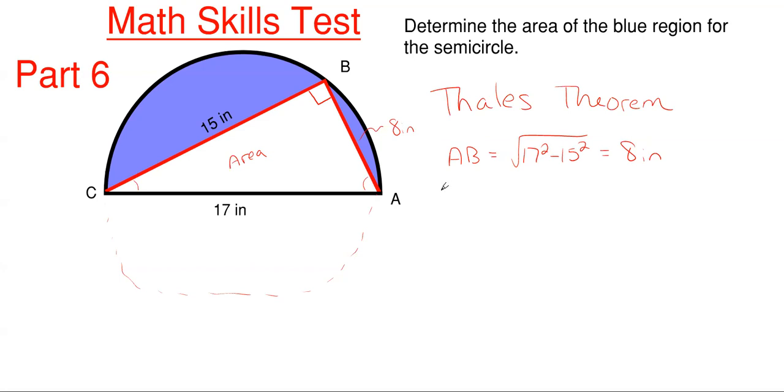Well that means that I can find the area of this triangle. So my triangle area is just going to be one half base times height, so one half times 8 inches times 15 inches, and that gives me exactly 60 inches squared. So this area inside here is 60 inches squared.